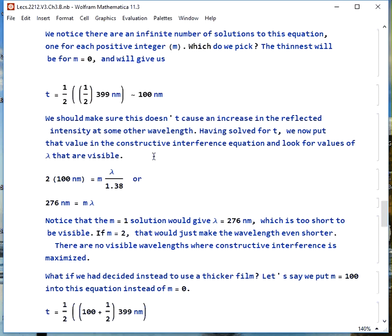We'll see there's another reason to do this as well. We should also make sure that while we're reducing the reflected intensity for green light we're not increasing it for something else. Now that we've solved for t we can put that value in the constructive interference equation and see if there are any values of lambda in the visible range.